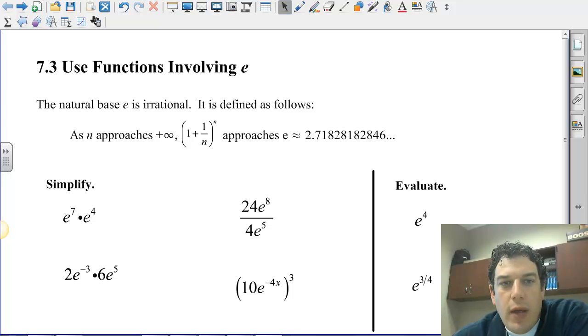It is an irrational number, kind of like pi or the square root of 3. And we find that using some of the compounding interest formulas that we've used before.